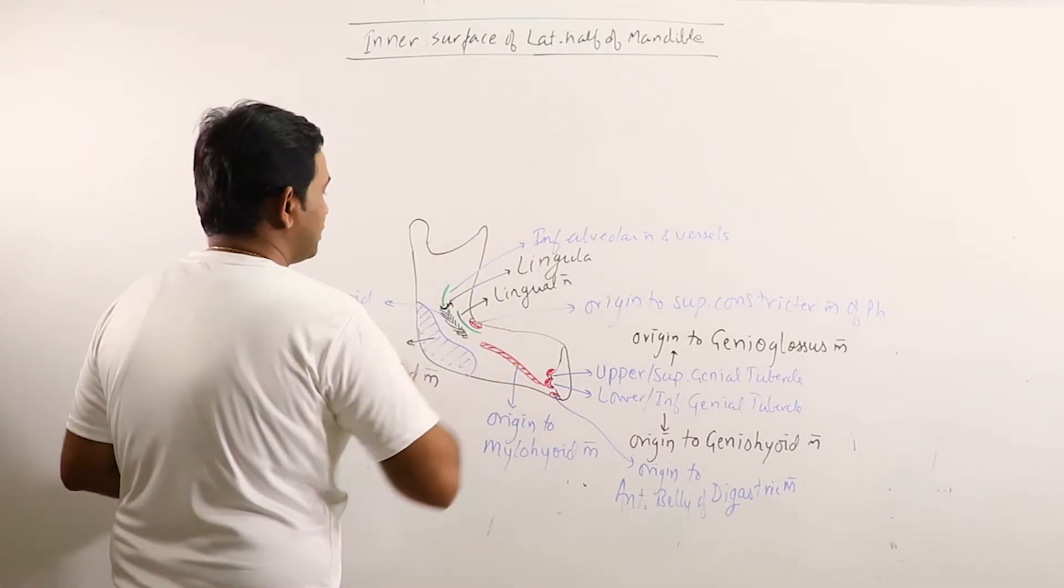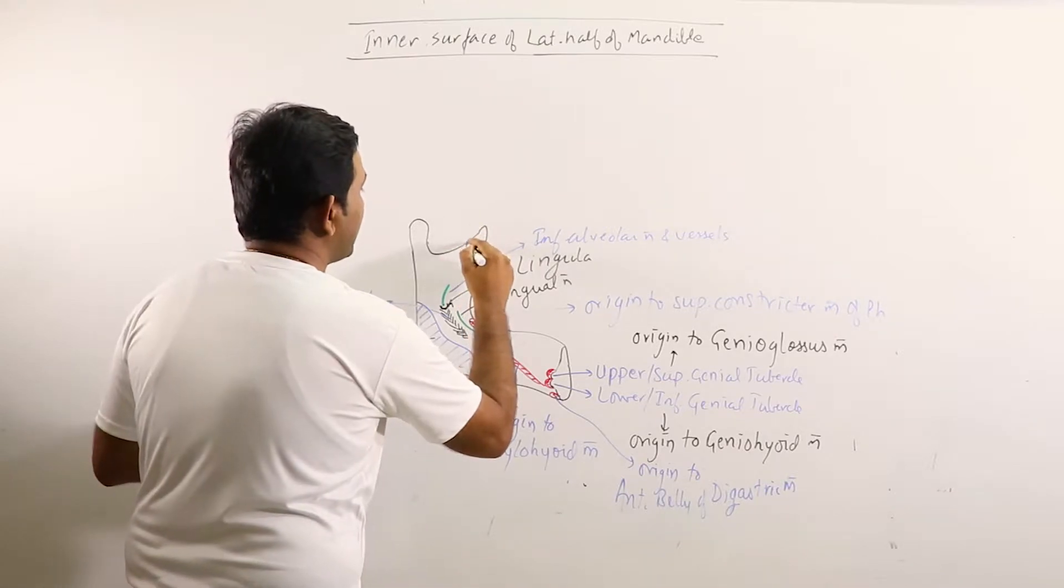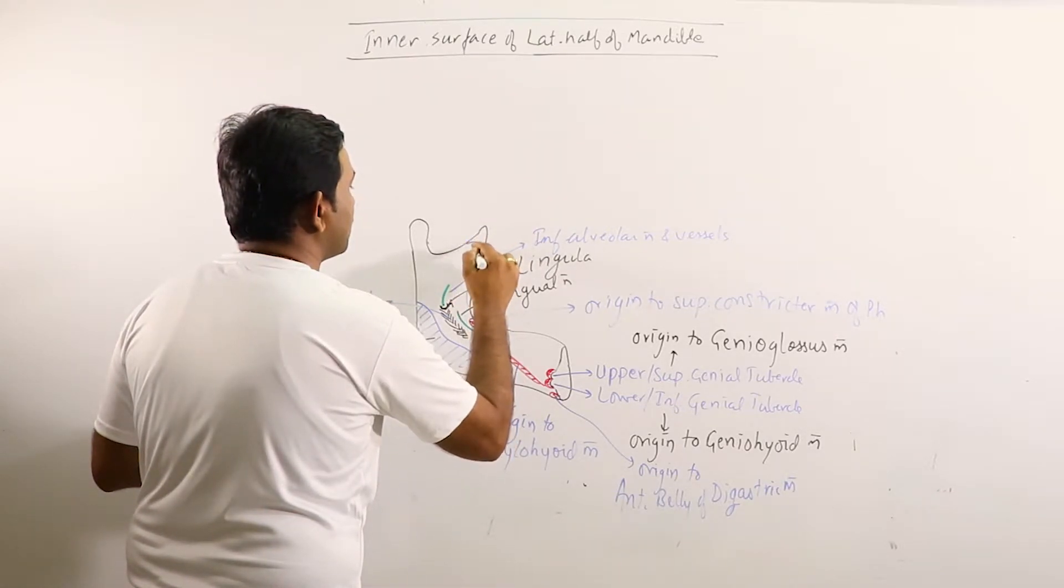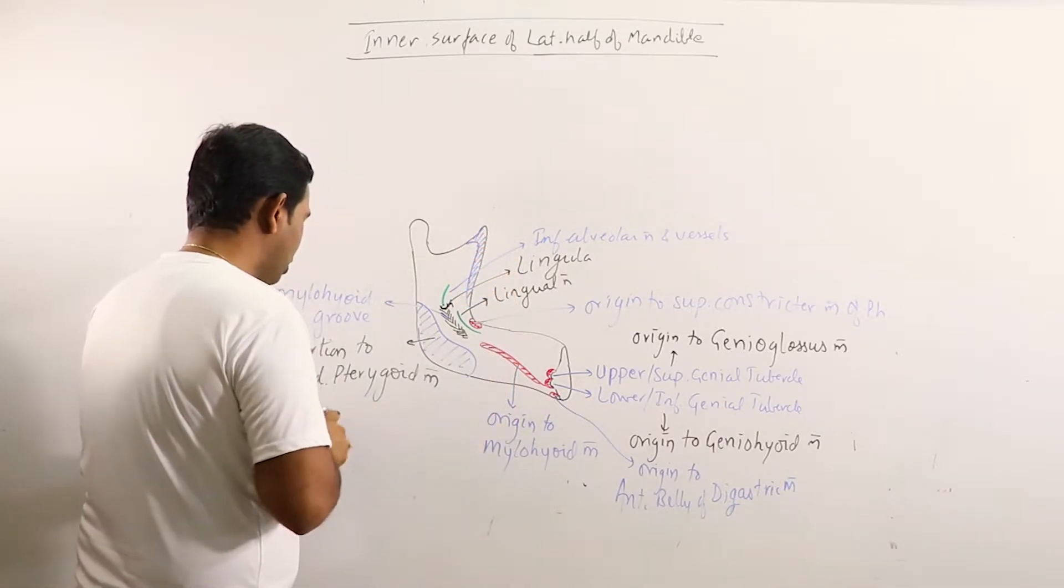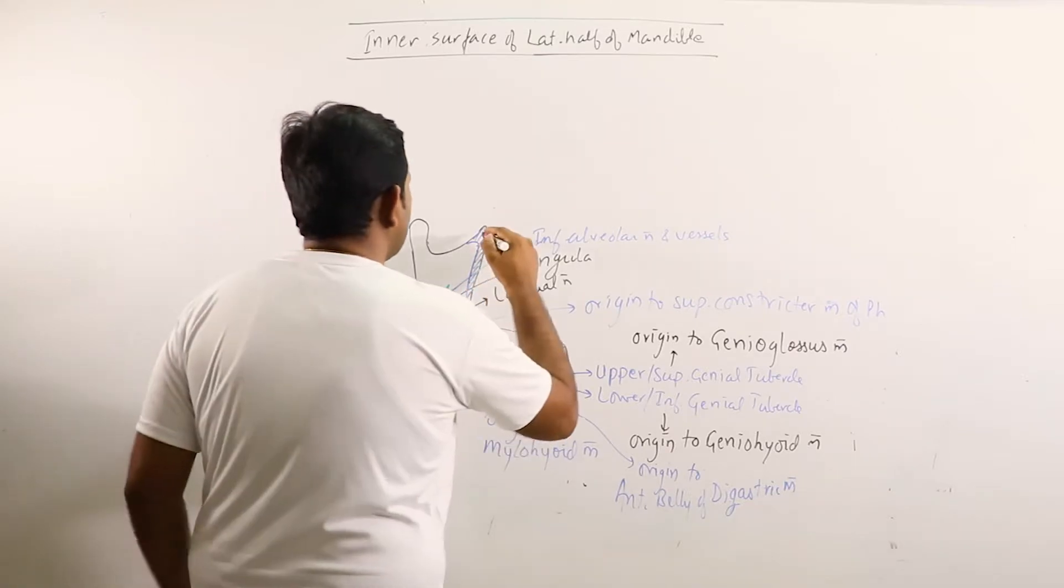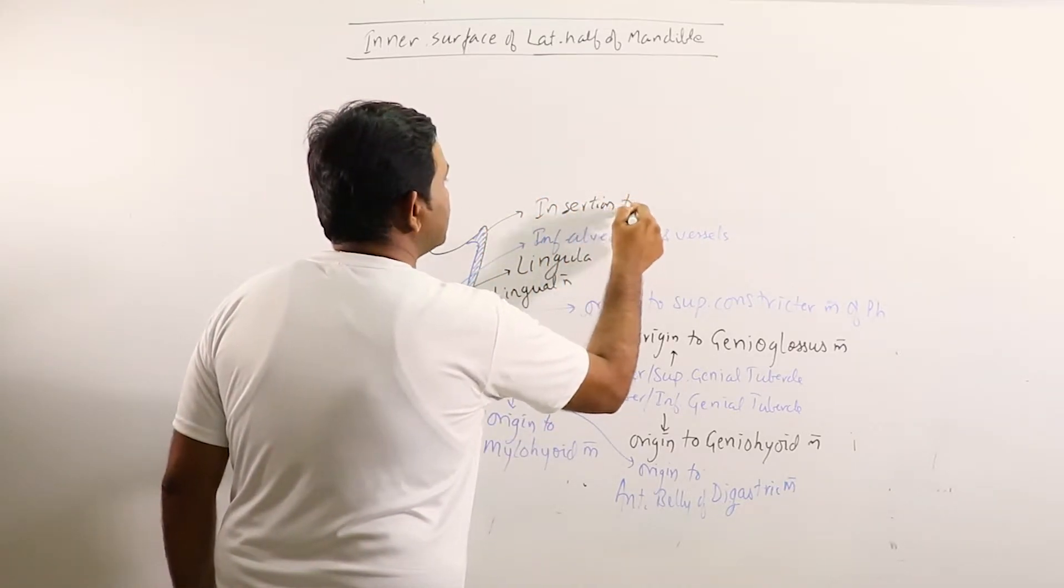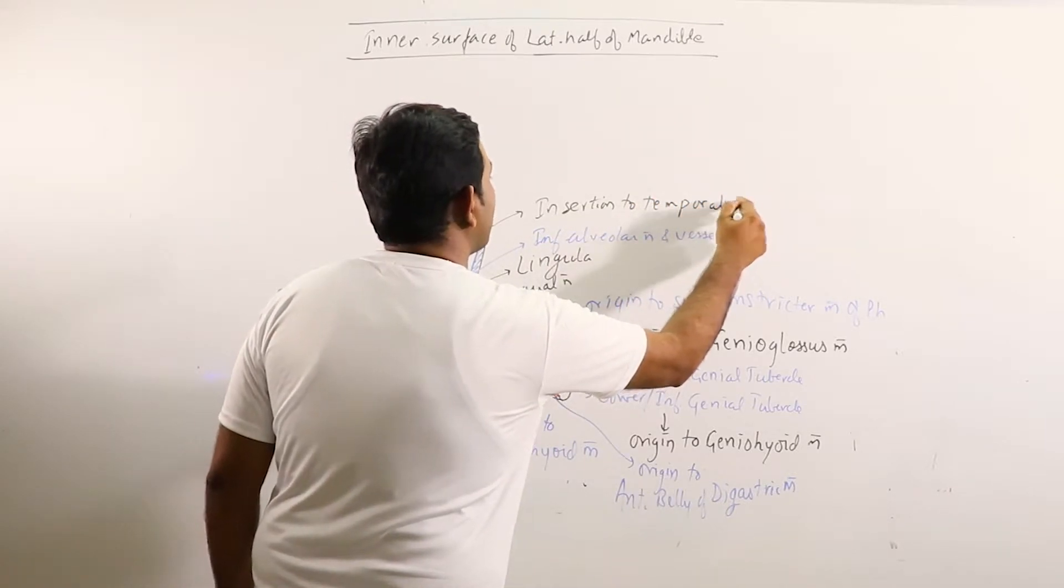This is the coronoid process and the spine of the coronoid process and the medial surface and also the anterior border of the ramus of the mandible basically gives insertion to temporalis muscle.